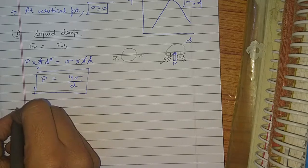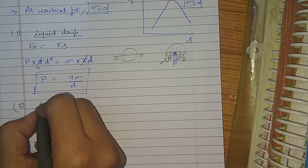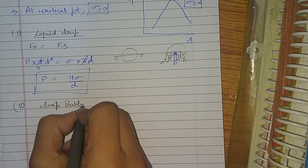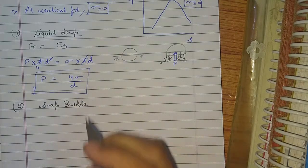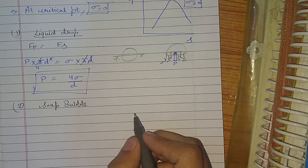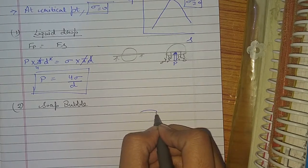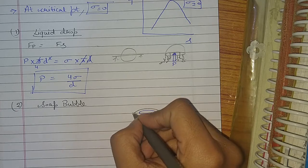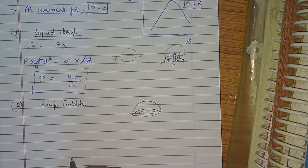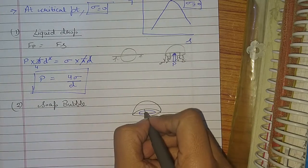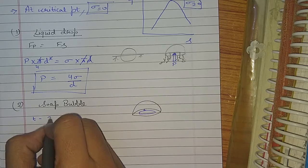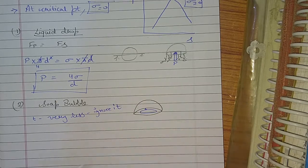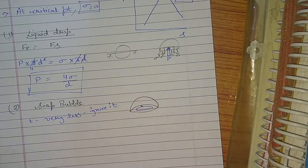Now the second case: we will have a soap bubble. When we see the cross-section area of the bubble, there will be two surfaces. Suppose the thickness between the surfaces is very small, so we ignore it.